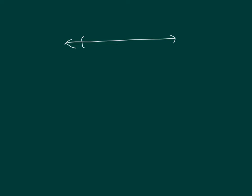Here's another number line. I'm going to label the endpoints 0 and 1, and I'm going to divide this number line into fourths. And then let me label it: 0, 1 fourth, 2 fourths, and 3 fourths.